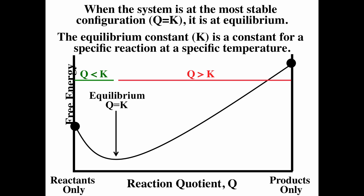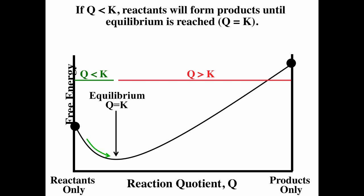If Q is less than K, reactants will form more products until equilibrium is reached. If Q is greater than K, products will form more reactants until equilibrium is reached.